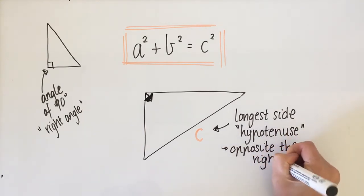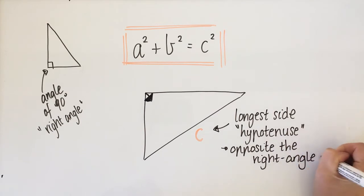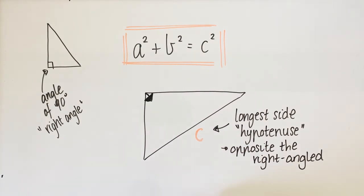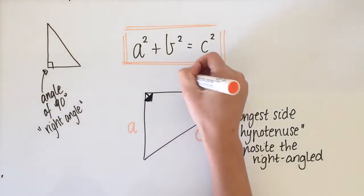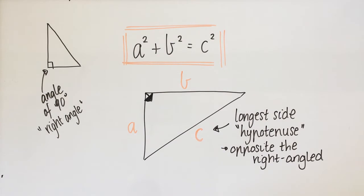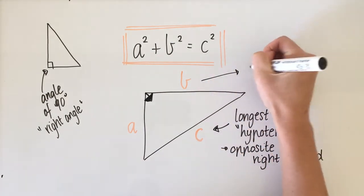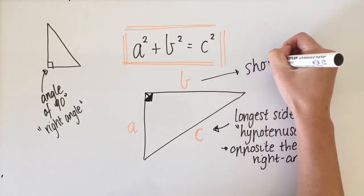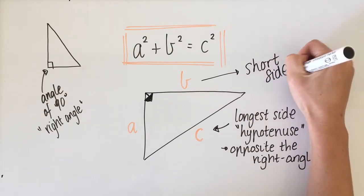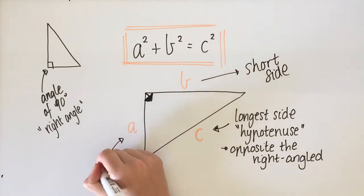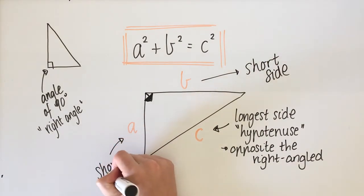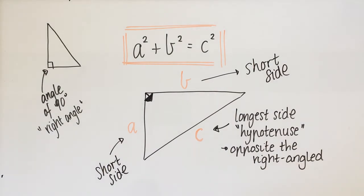This is always true in a right-angle triangle: the hypotenuse is always opposite the right angle. The other two sides are called a and b. C is always the longest side, and a and b — it doesn't matter which one is which — are always the shorter sides. We call them short sides because they are shorter than the hypotenuse.